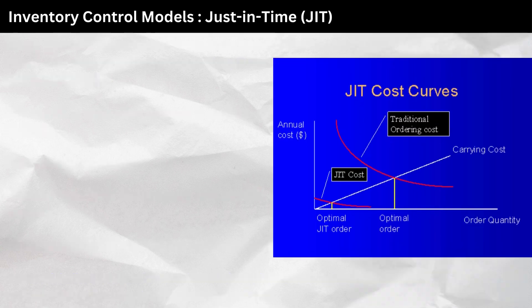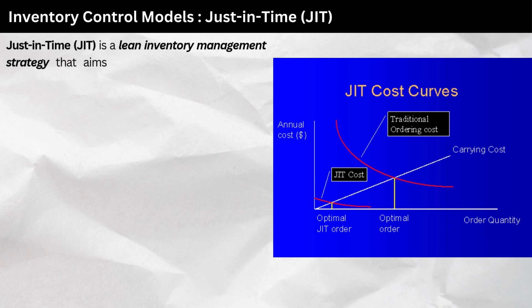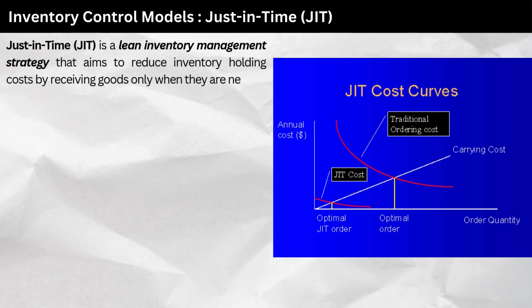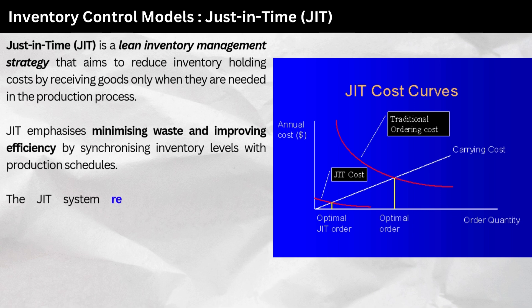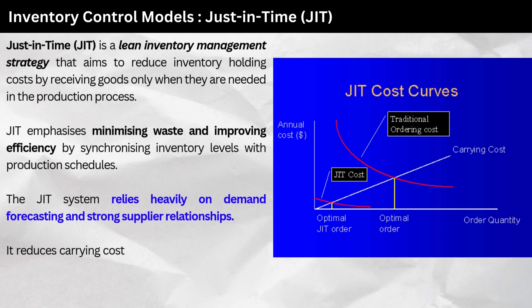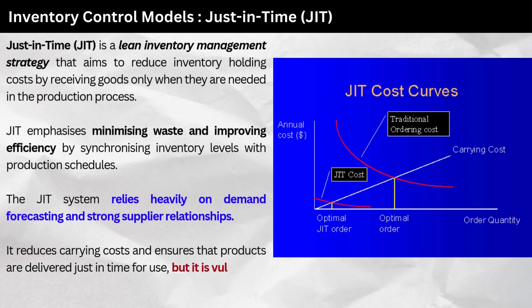4. Just-in-time (JIT) inventory system. JIT is a lean inventory management strategy that aims to reduce inventory holding costs by receiving goods only when they are needed in the production process. JIT emphasizes minimizing waste and improving efficiency by synchronizing inventory levels with production schedules. The JIT system relies heavily on demand forecasting and strong supplier relationships. It reduces carrying costs and ensures products are delivered just in time for use, but it is vulnerable to supply chain disruptions.